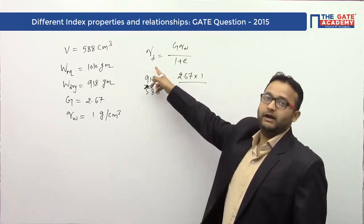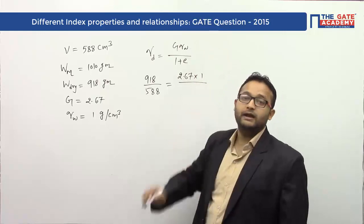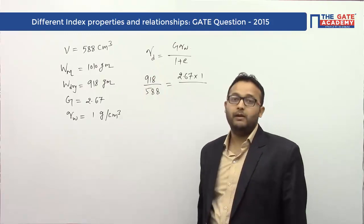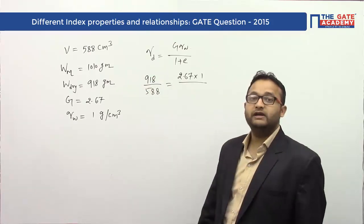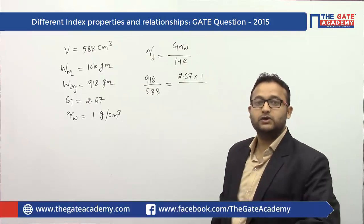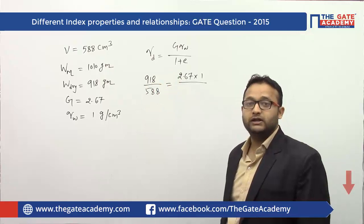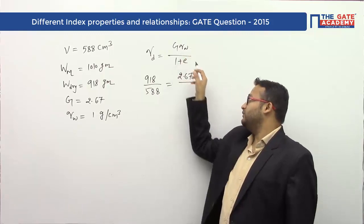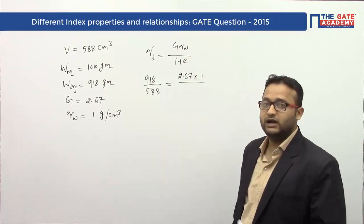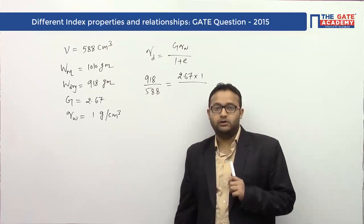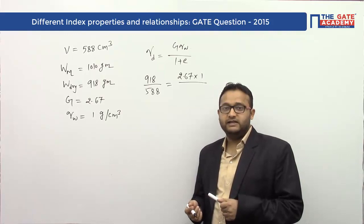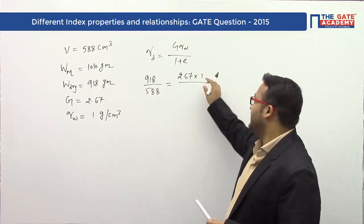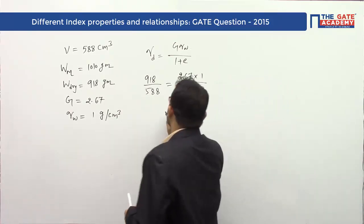Note on units: if gamma_d is calculated in kilonewton per meter cube, then gamma_w is 9.81 kilonewton per meter cube. If calculated in kg per meter cube, gamma_w is 1000 kg per meter cube. Since we are calculating gamma_d in gram per centimeter cube, gamma_w is 1 gram per centimeter cube. So we write 1 gram per centimeter cube here in the formula for (1 + e).